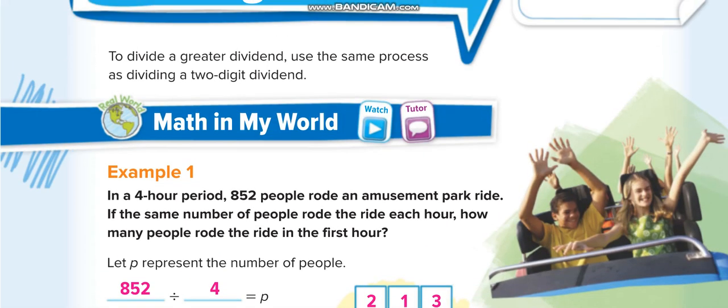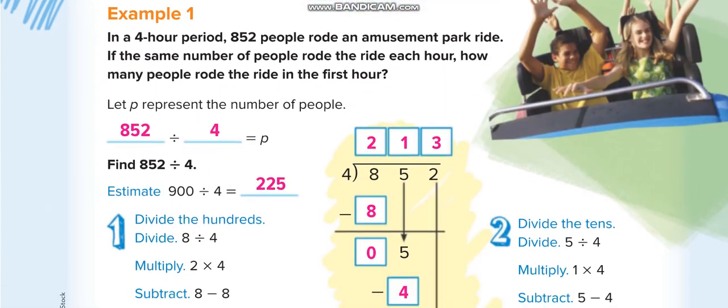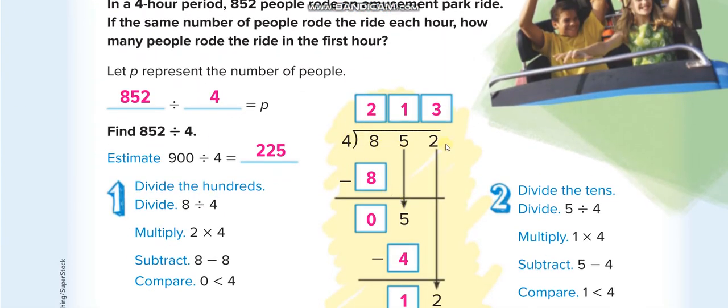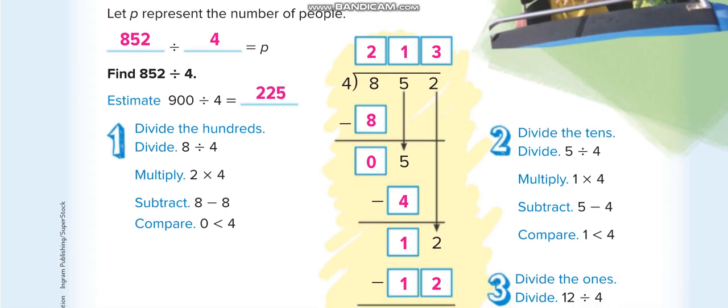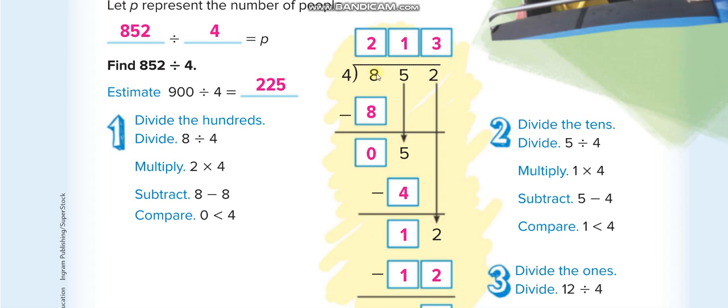This lesson is very simple. You will have big dividends like 852. You will divide it one by one, each digit. First, you will take 8. If the first digit is less than the divisor, then you will take two digits together. But if the first digit is more than the divisor, like here, you will just divide by one digit.